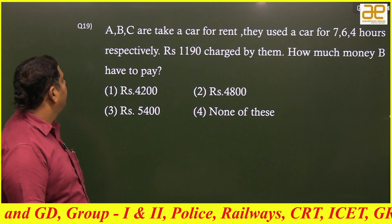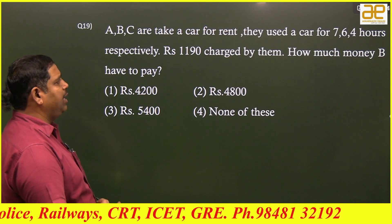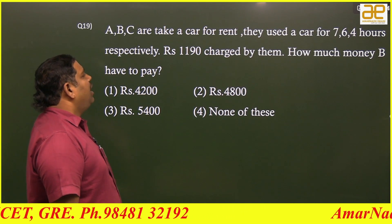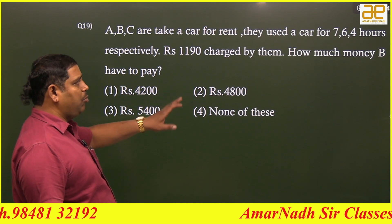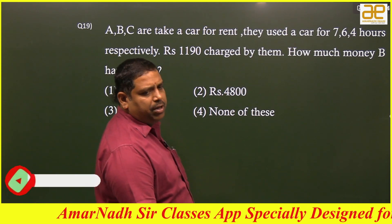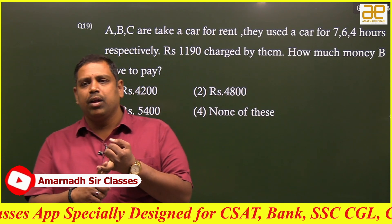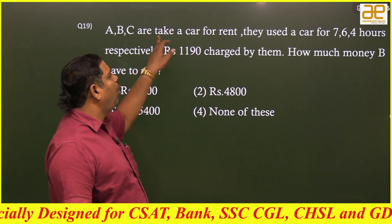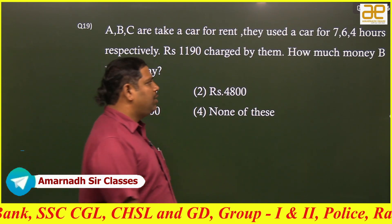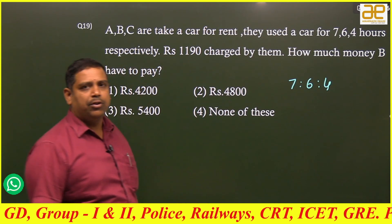Let's see the next one. A, B, C have taken a car for rent and used it for 7, 6, and 4 hours respectively. 1190 rupees is charged for the rent. In general, for rent problems we distribute in the ratio of number of vehicles into time period. But here, all together have taken a single car, so the number of cars is one for each. We distribute the rent in the ratio of their time periods of utilization.